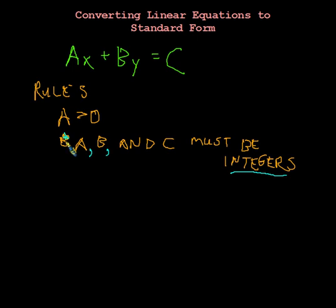Now, a we already said is going to be greater than zero. So a is going to be positive. But a, b, and c must be integers. So b and c can be whole numbers or their opposites.